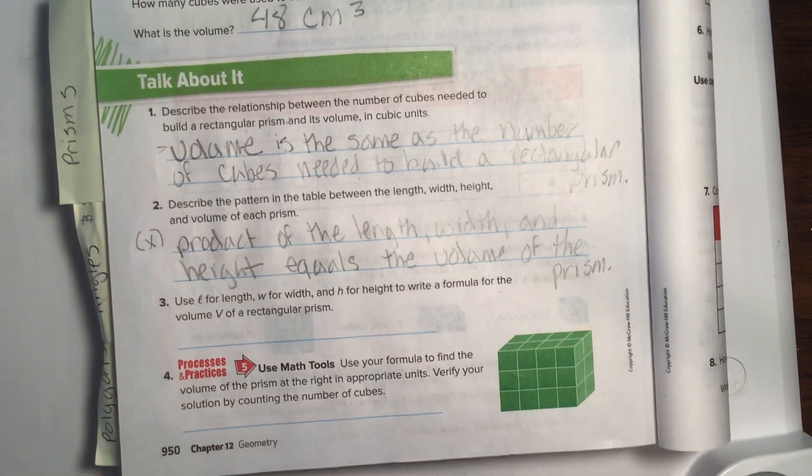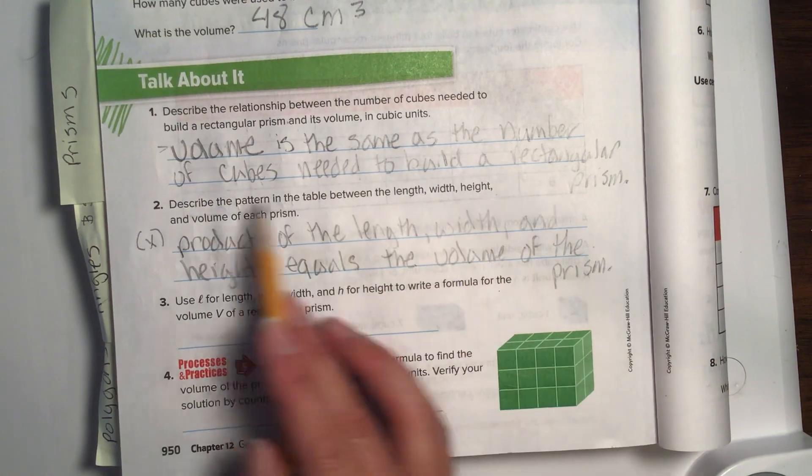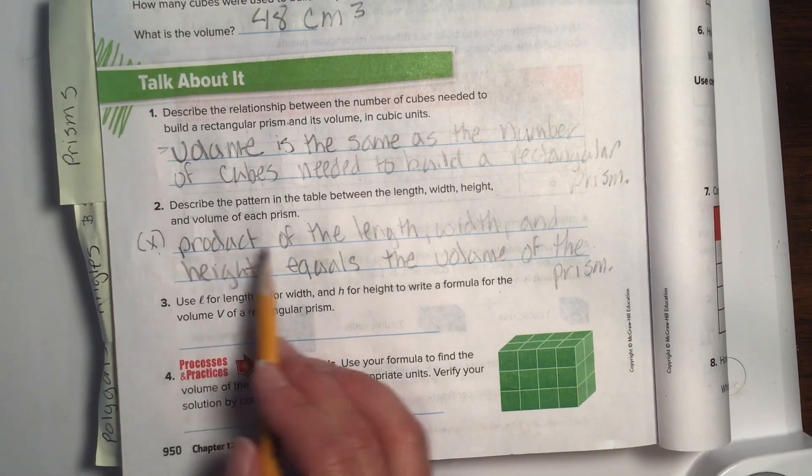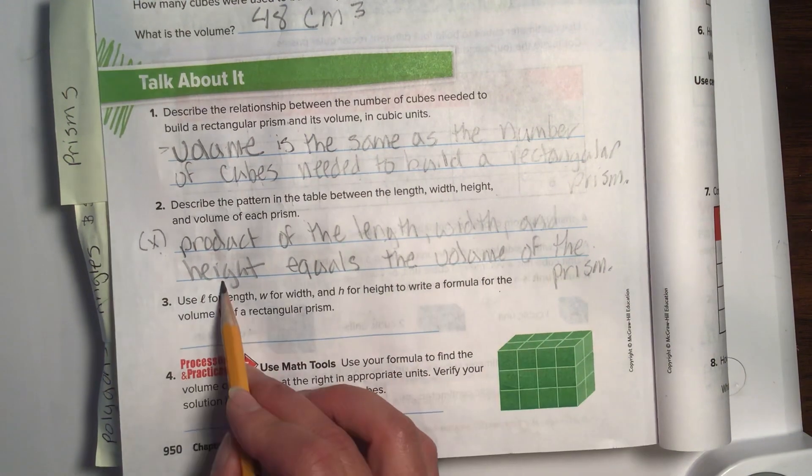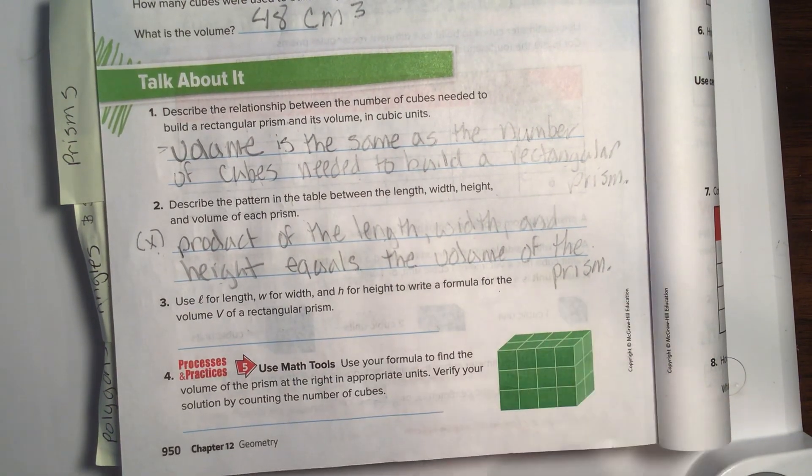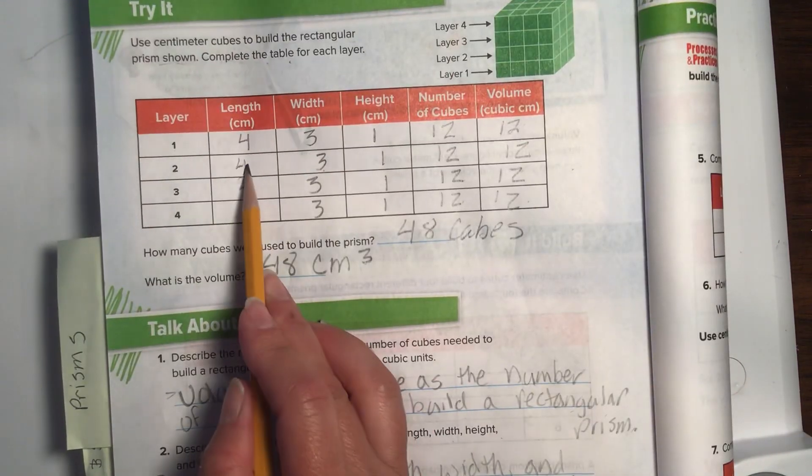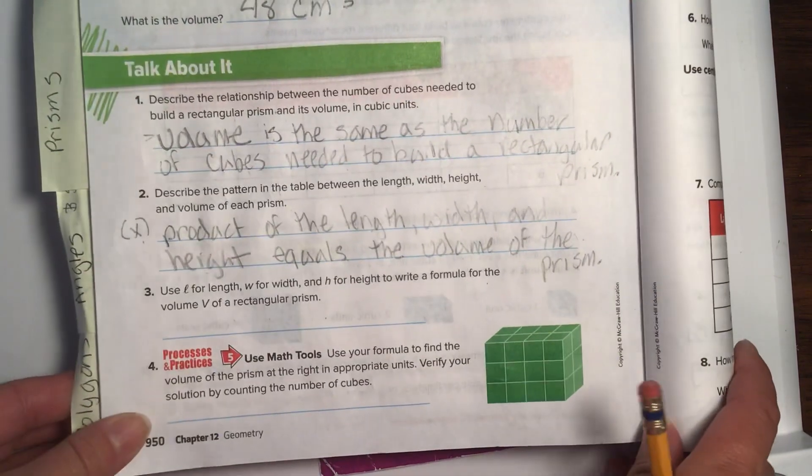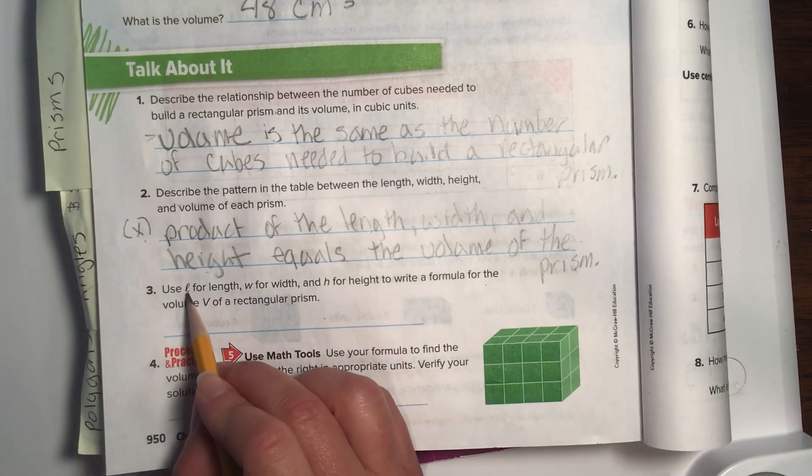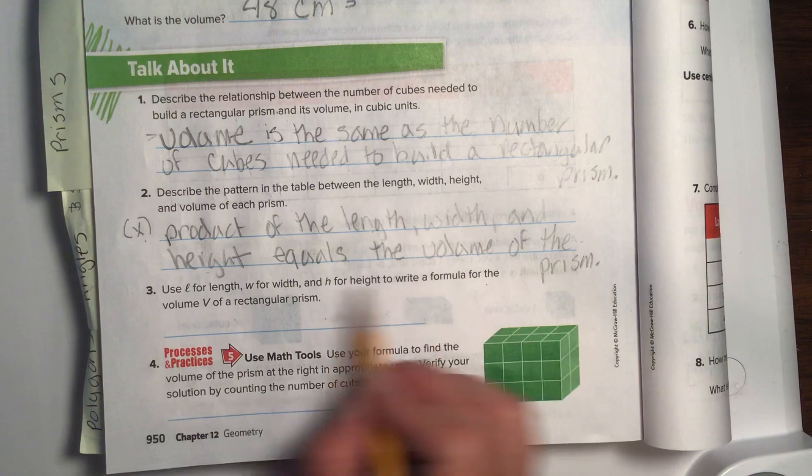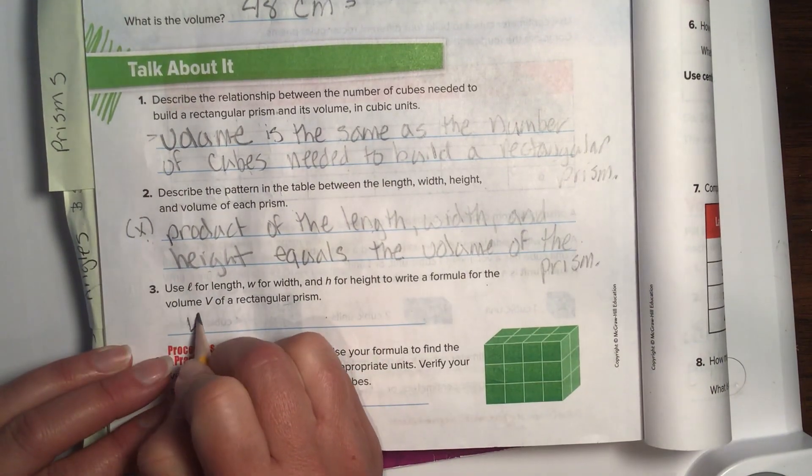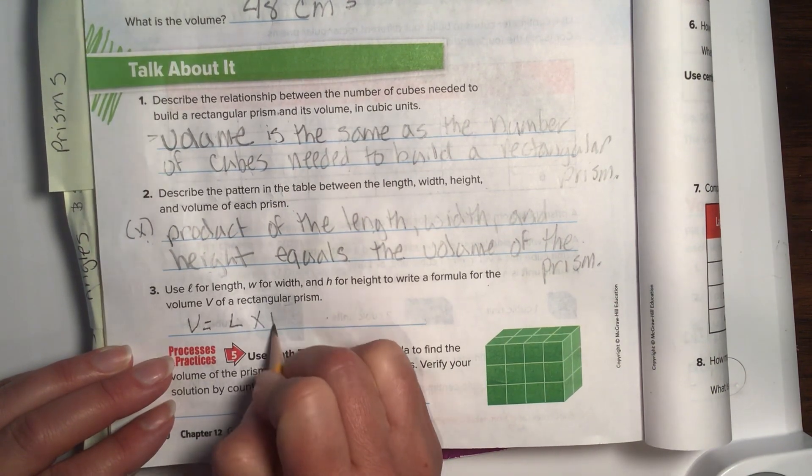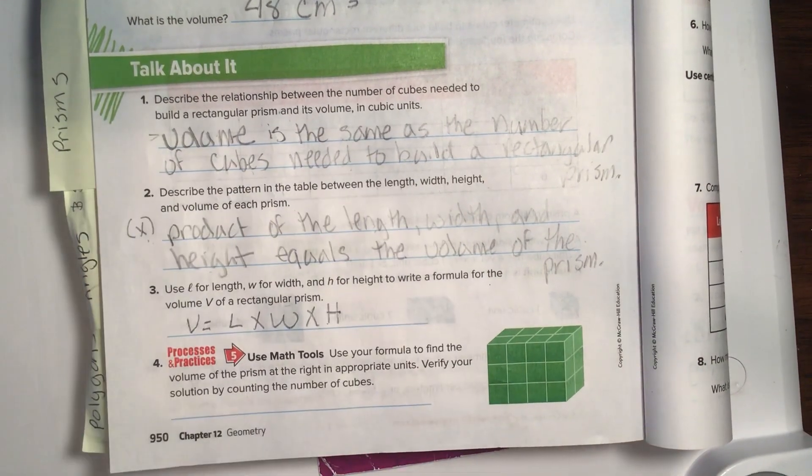Number two. Describe the pattern in the table between length, width, height, and the volume of each prism. Product, remember, is a fancy word for the answer to a multiplication problem. Product of the length, width, and height equals the volume of the prism. So, that is just pretty much saying length times width times height equals the volume of the prism. Number three. Use L for length, W for width, and H for height to write a formula for the volume of the prism. They just want you to pretty much write exactly what they just said. So, volume equals length times width times height. Ta-da! Easy peasy.